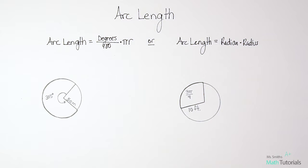Arc length is pretty easy to find as long as you know the formulas. We're going to look at two different formulas: one if you've been given your information in degrees and one if you've been given your information in radians.